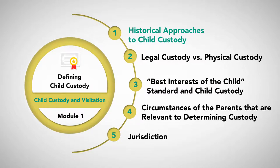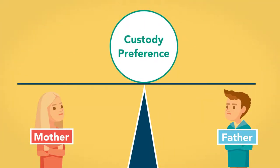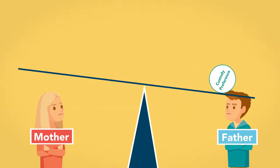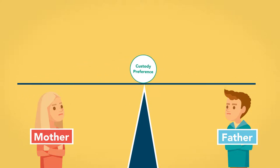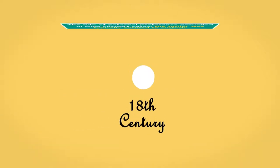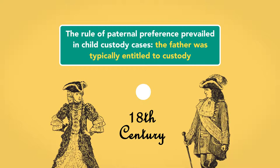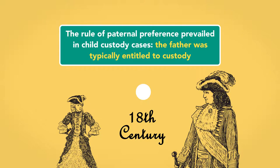Approaches to child custody have toggled and swayed, with preference once being given to the father and then swinging back to the mother before approaching something of an equilibrium in recent years. In the 18th century, the rule of paternal preference prevailed in child custody cases. The father was typically entitled to custody.